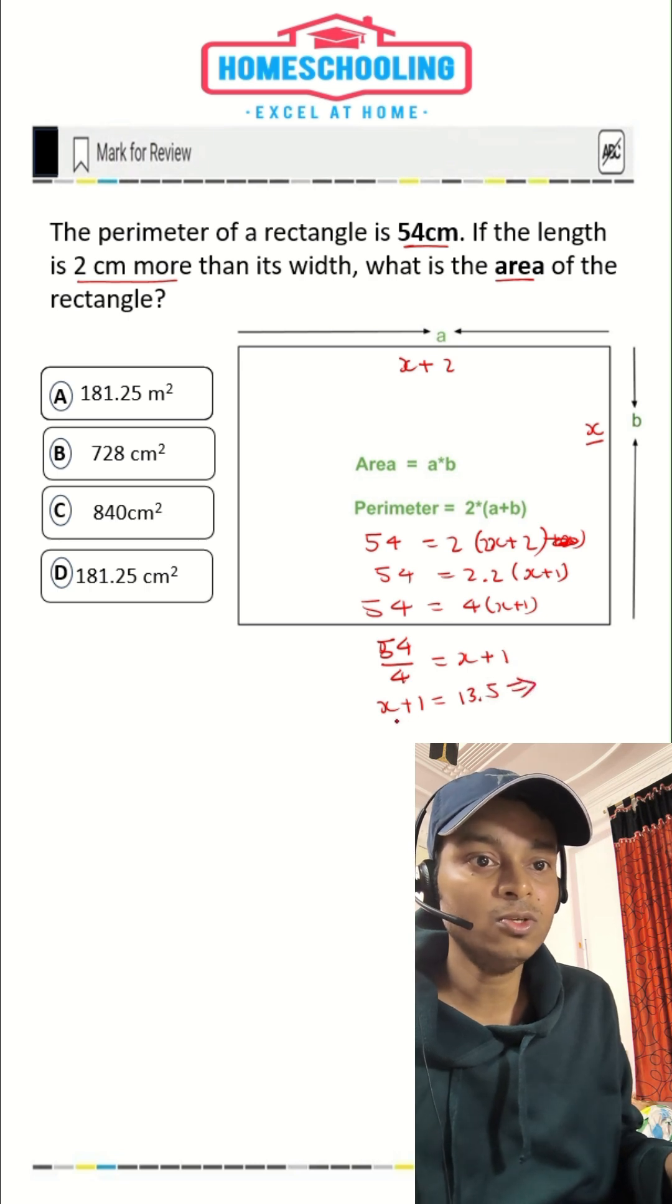So from this, we can find the X value. So X value would be 13.5 minus one. X would be 12.5.